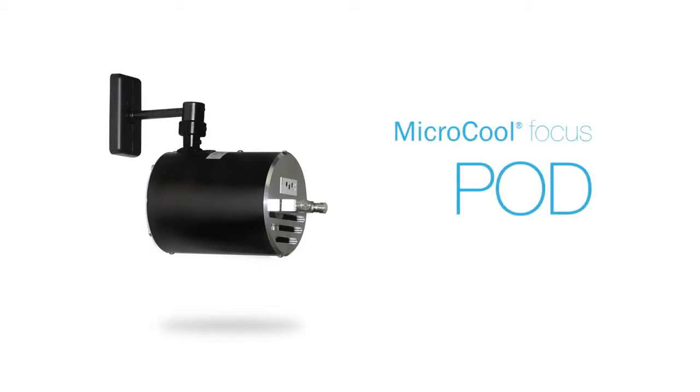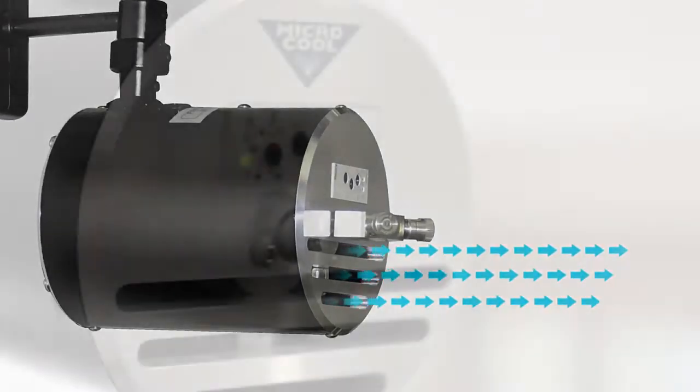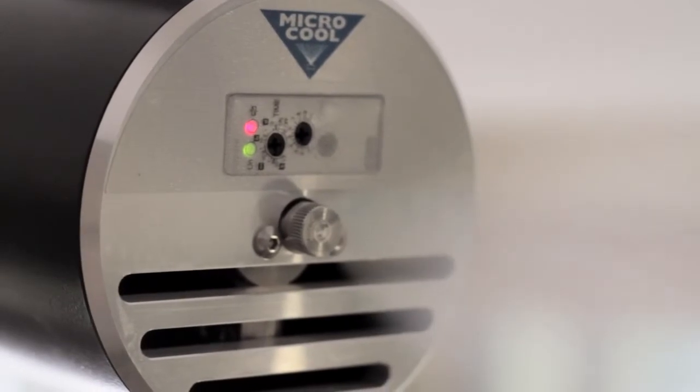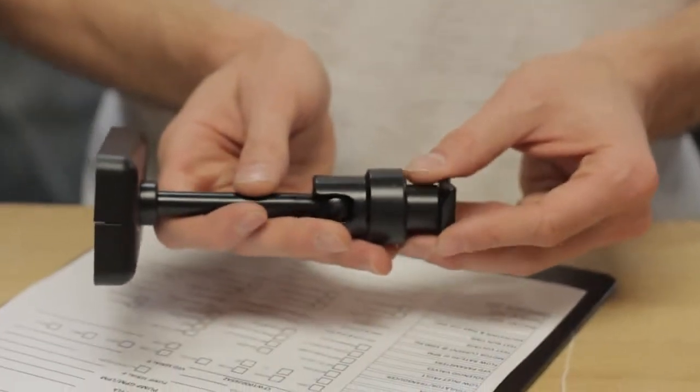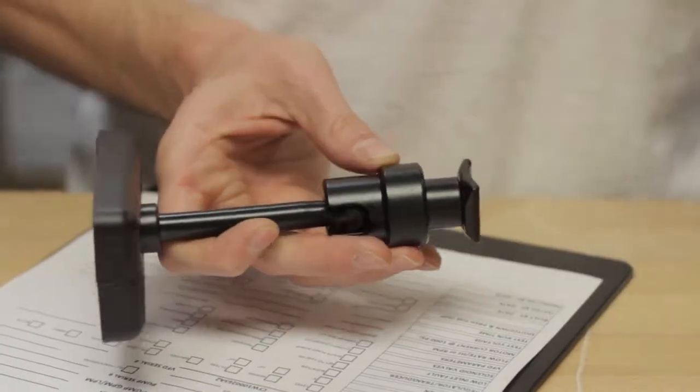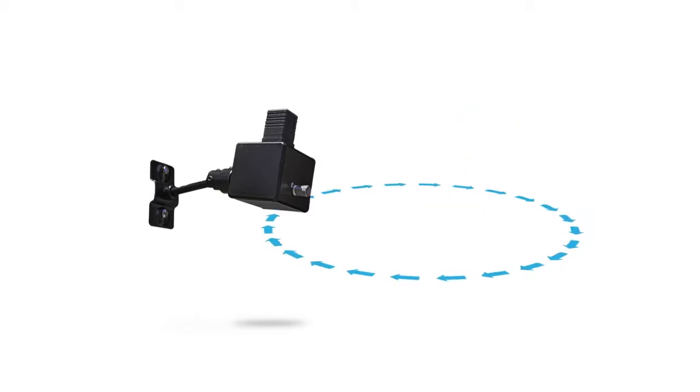The Focus Pod incorporates a distribution fan and straightening grill to further distribute the fog. The pulsation speed can be adjusted to suit the individual application. A convenient mounting arm allows precise orientation and positioning of the nozzle. The Focus Cube is for use in rooms where distribution is taken care of by existing air circulation equipment.